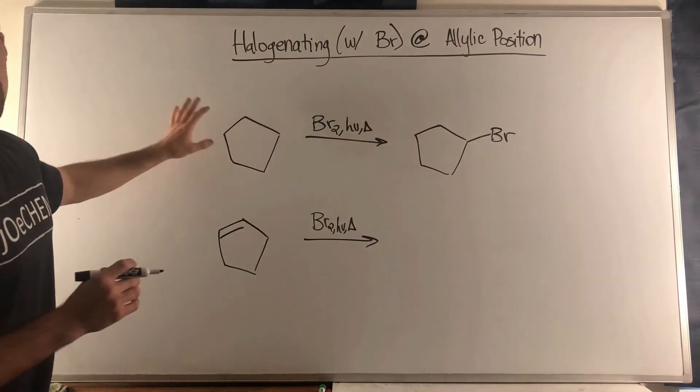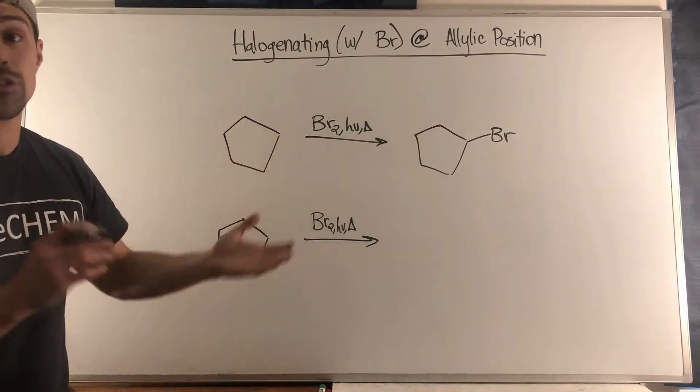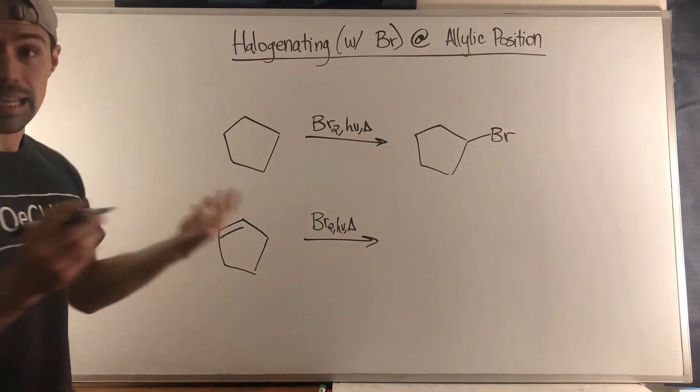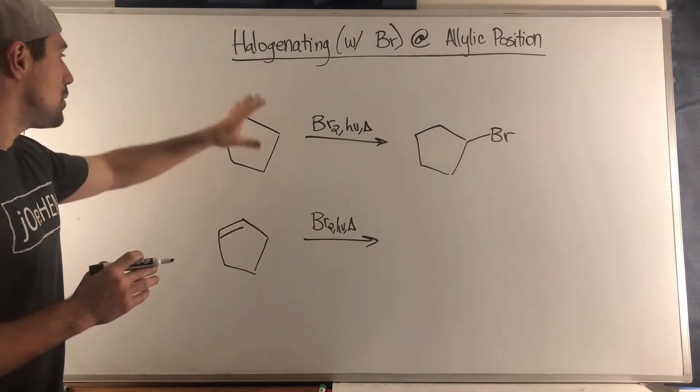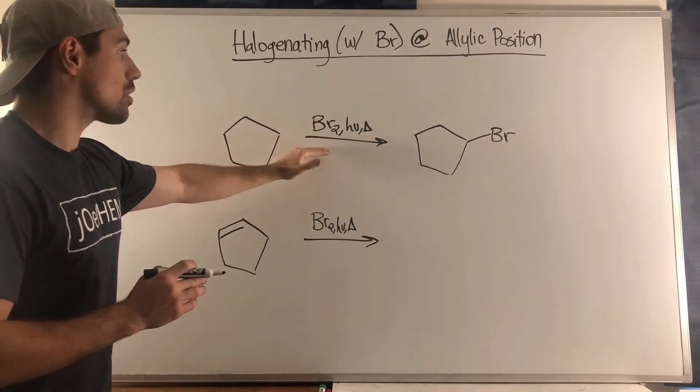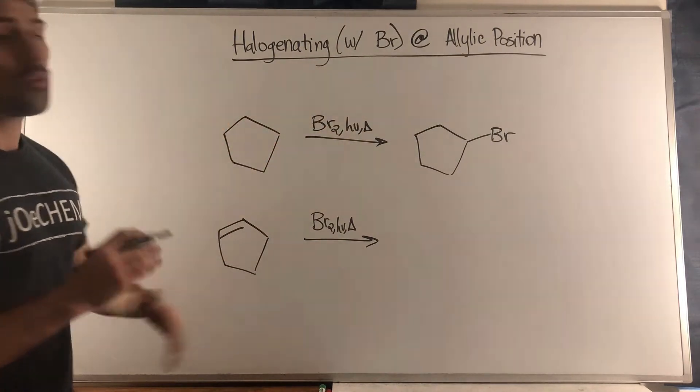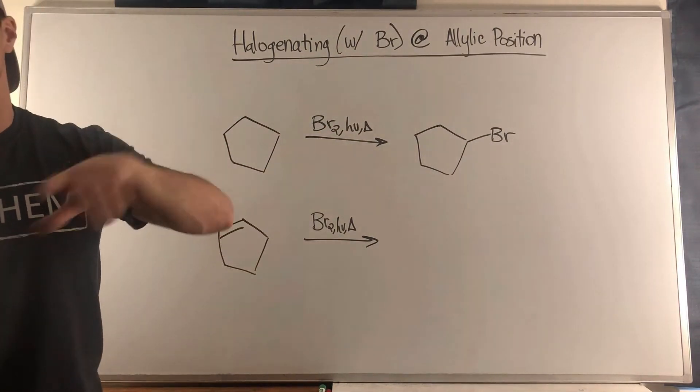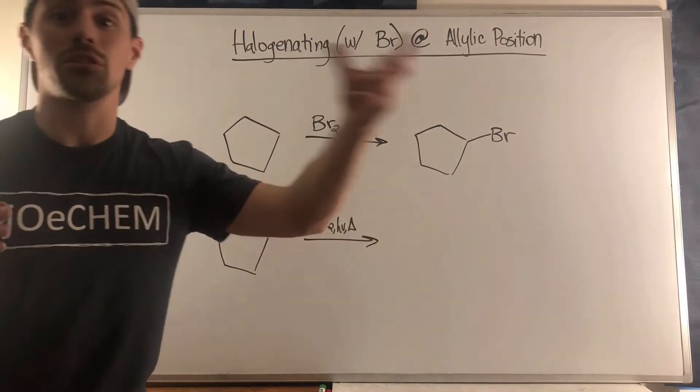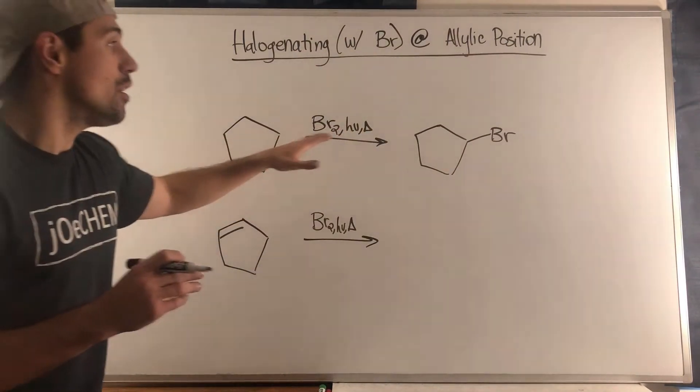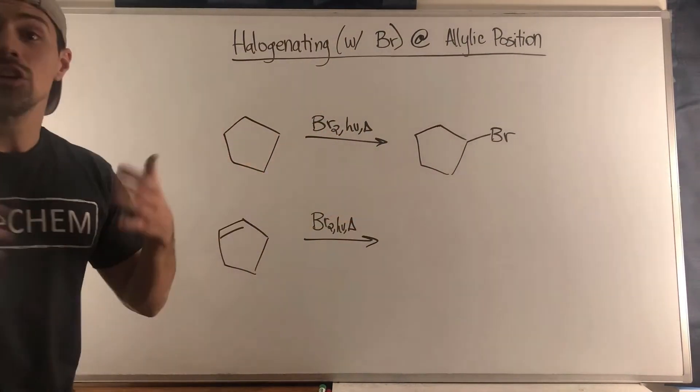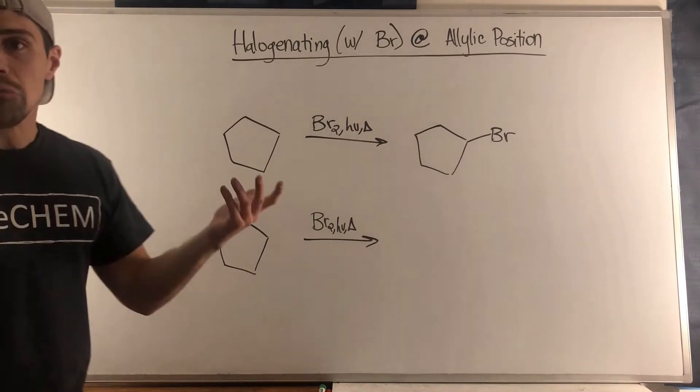If we take a look, this looks familiar - this was one of the first reactions you most likely learned in organic chemistry. If you have an alkane and you have Br2 with light and heat, we know the mechanism: you create a bromine radical, you create a carbon radical, then you bring another Br2 along, you stick a bromine on, and we get to functionalize one of these carbons.